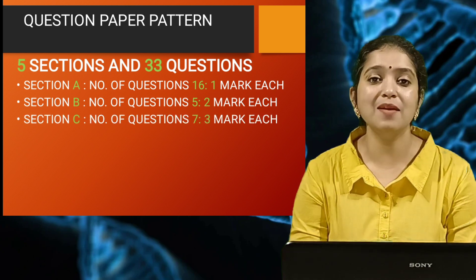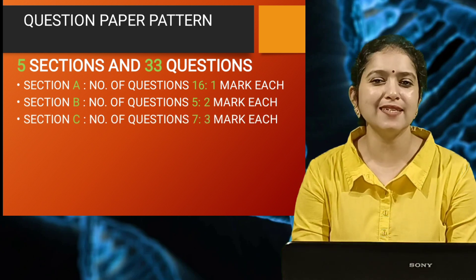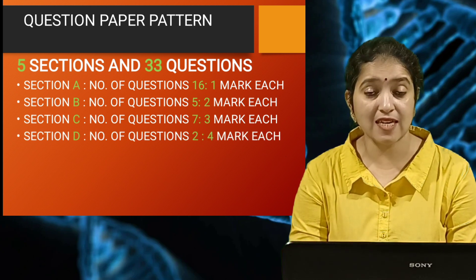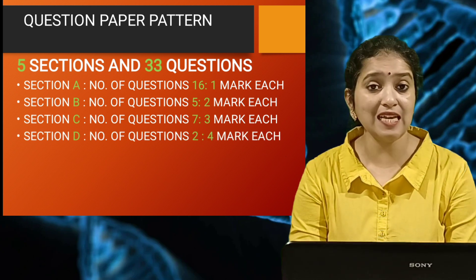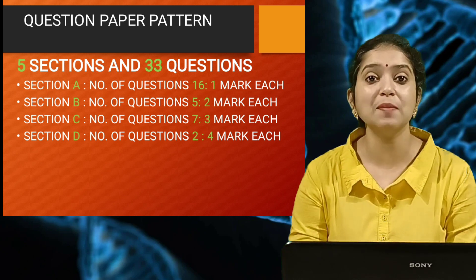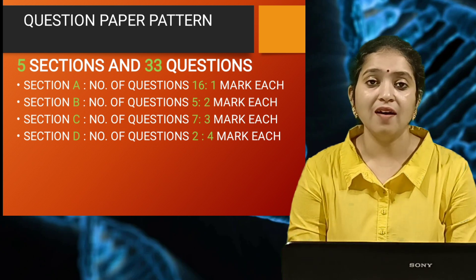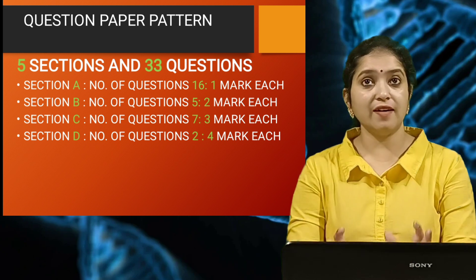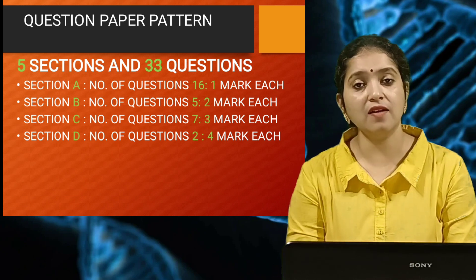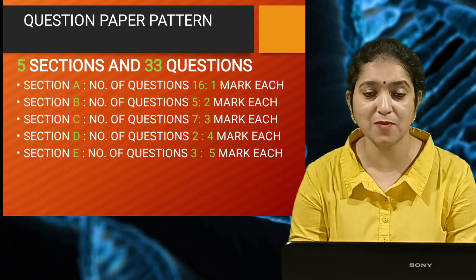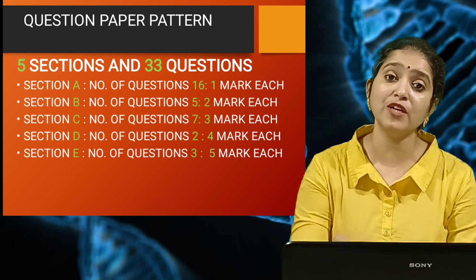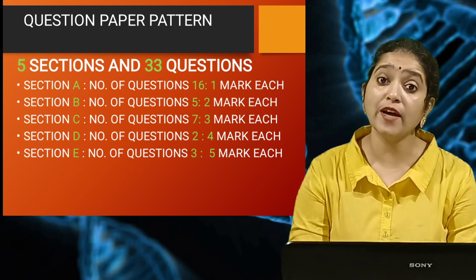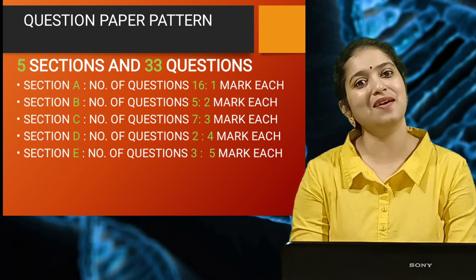Section C has 3-mark questions, which are short answer type 2. Section D consists of case-based questions — 2 number of questions, each carrying 4 marks. In this section, subparts will be there, and based on a diagram or a paragraph from certain topics from the NCERT textbook, some questions will be asked and we are supposed to write the answers. Then Section E has long answer type questions, each carrying 5 marks.